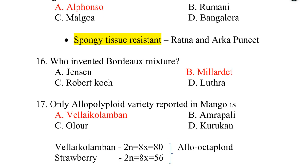The only allopolyploid variety reported in mango is Vellaikolumban — option A. Its chromosome number is 2N = 8X = 80. Strawberry is also an allo-octoploid with 2N = 8X = 56.